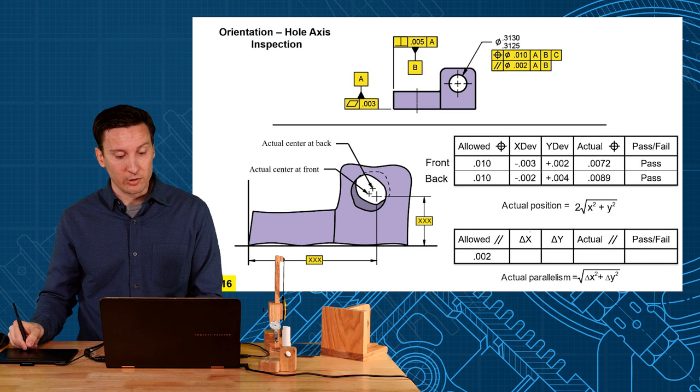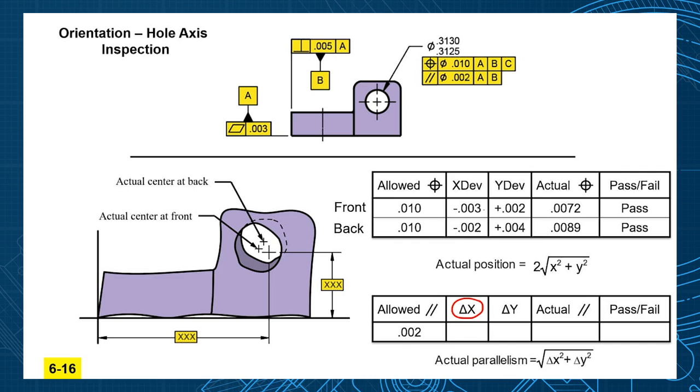So we do that by looking at the delta in your x deviations. So how much has it deviated in that x direction from the front to the back? So the delta there is going to be one thou, the difference between minus 3 and minus 2. Then we do the same thing in the y direction. What is the delta in your y direction between the front and back of the hole? How much is it tilted from front to back? So plus 2 plus 4, that range there is two thou.